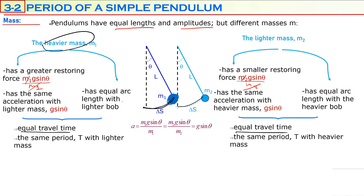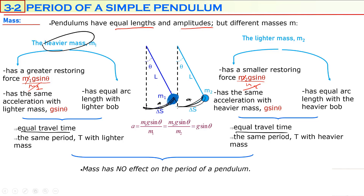Their arc lengths are equal and their accelerations are equal, so the time of travel from one position to the other is equal. Therefore, both pendulums have the same period. Mass has no effect on the period of a simple pendulum.